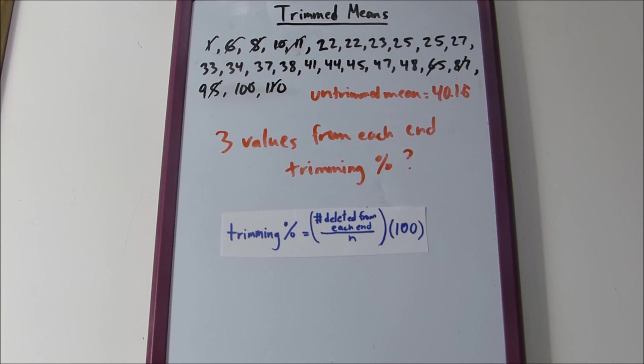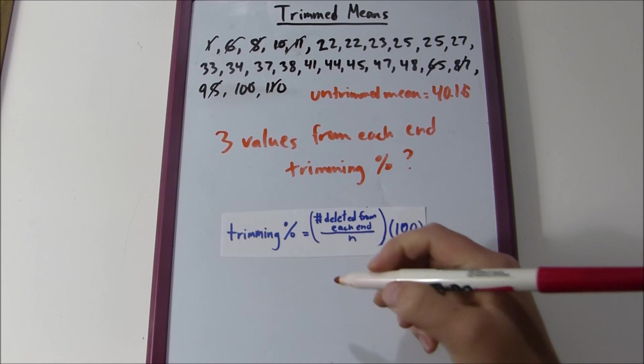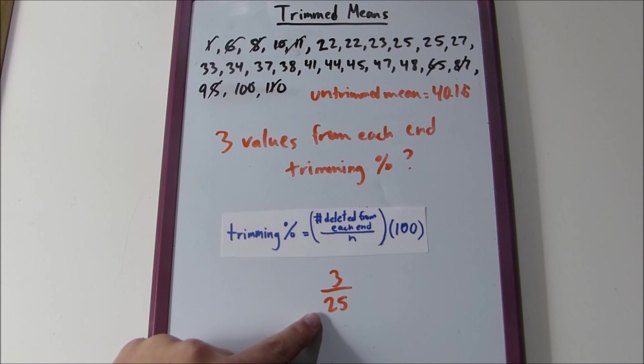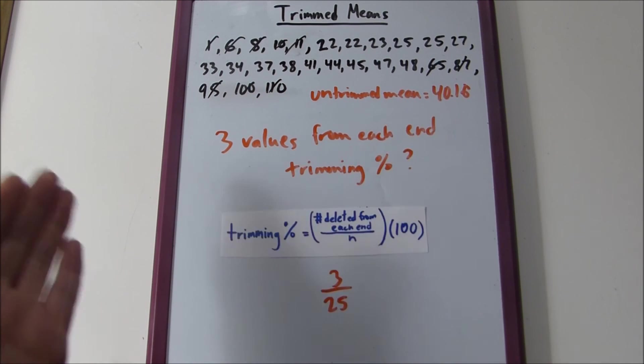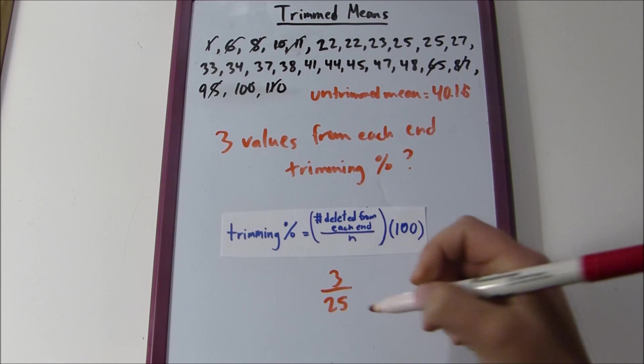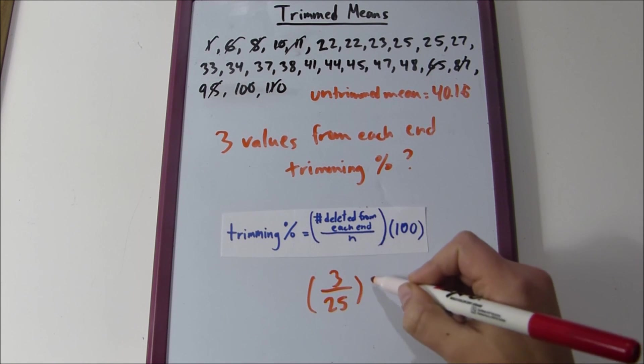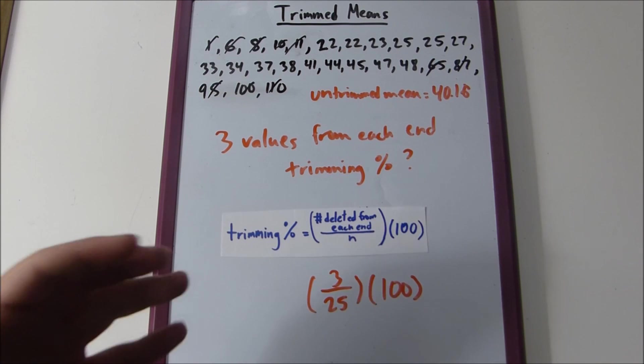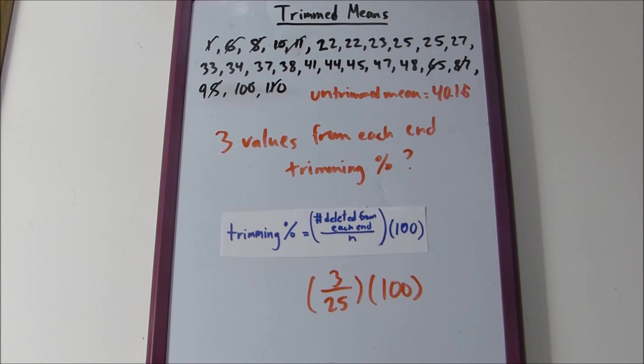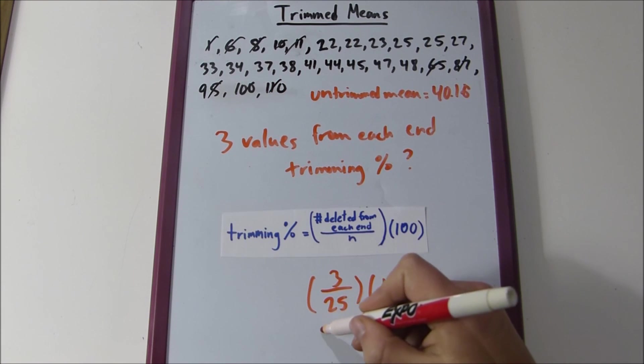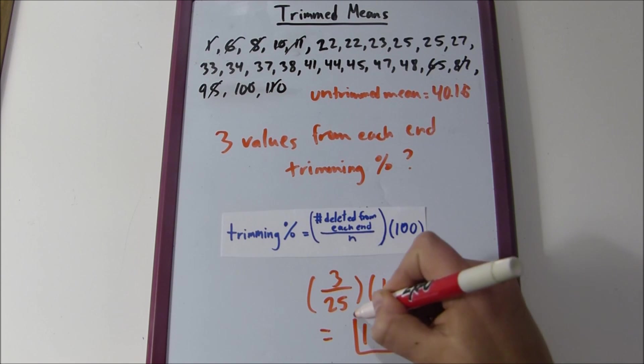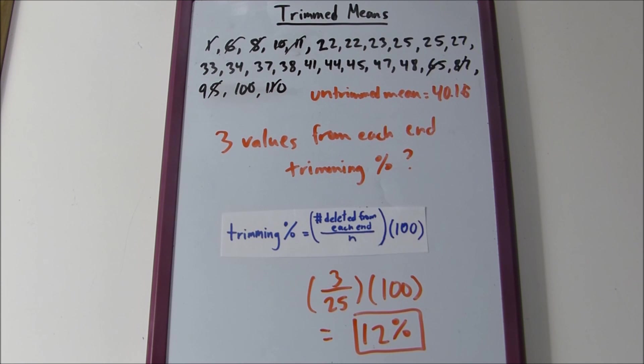That should make sense. With 3 deleted from each end, it would be 3 divided by 25. Notice we're using all the values, the untrimmed number of values in the distribution for this calculation, then times 100, because you're getting a decimal but your trimming percentage should be between 0 and 100. That ends up being 12%, and that's how easy trimmed means are.